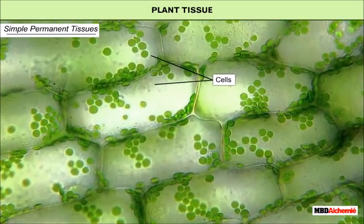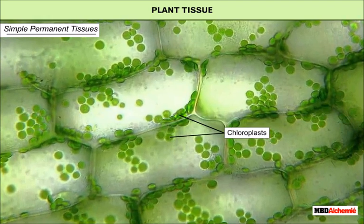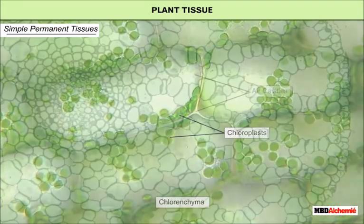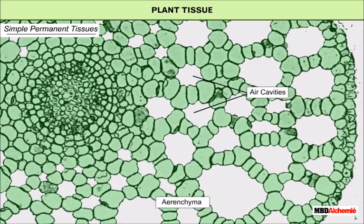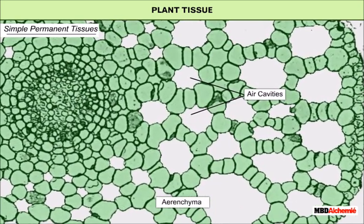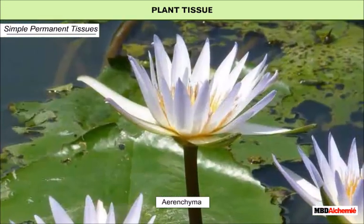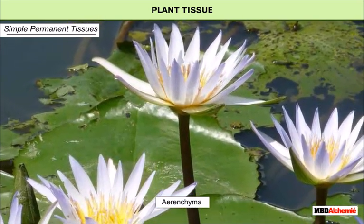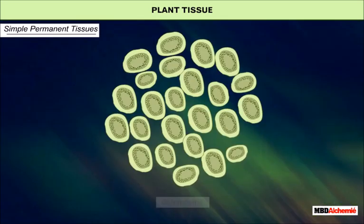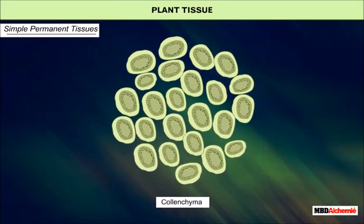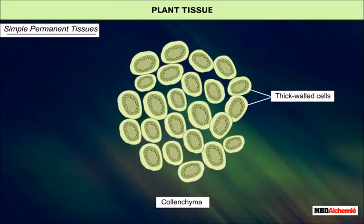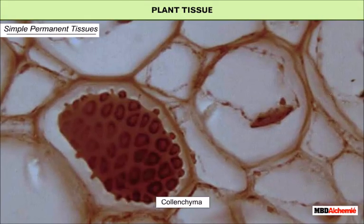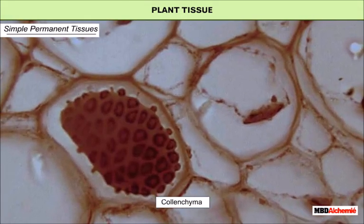In some situations, parenchyma contains chlorophyll and performs photosynthesis — then it is called chlorenchyma. In aquatic plants, large air cavities are present in parenchyma, which provides buoyancy to the plants; such a type of parenchyma is called aerenchyma. Colenchyma is formed of living and thick-walled cells with extra cellulose at the corners. It provides flexibility and mechanical support to the plants.